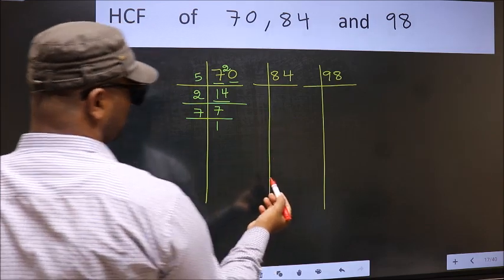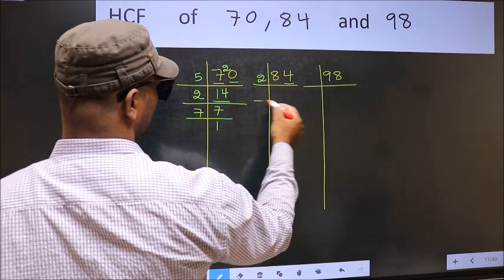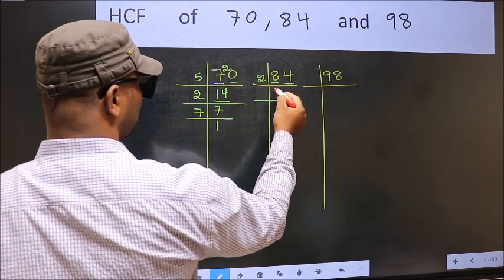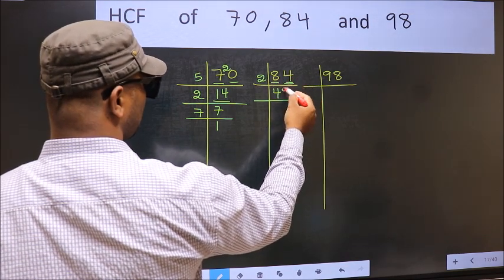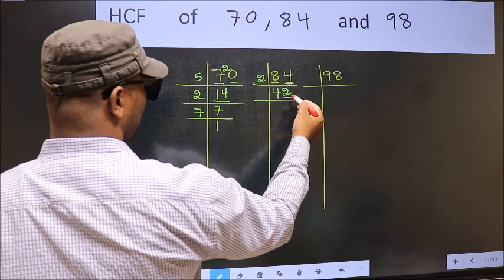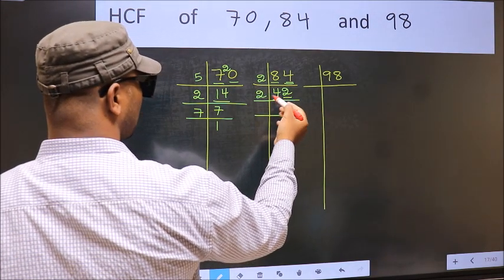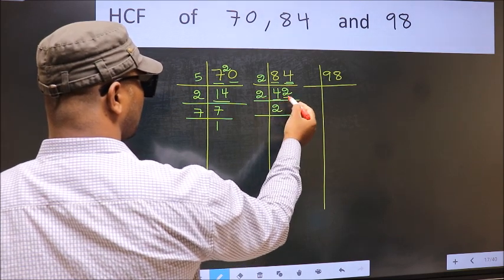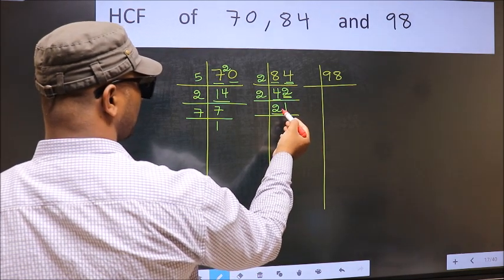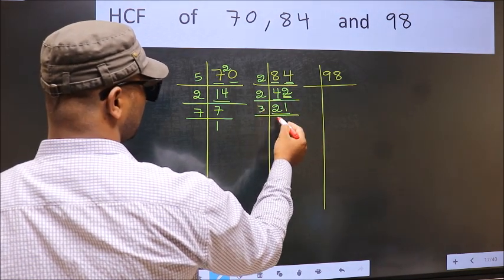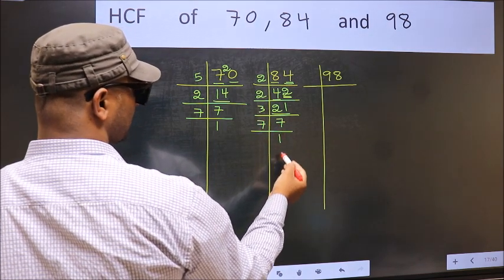The other number. Last digit is 4, even, so take 2. First number 8, when do we get 8 in the 2 table? 2 fours 8. The other number 4, when do we get 4 in the 2 table? 2 twos 4. Now last digit 2, even, so take 2. First number 4, when do we get 4 in the 2 table? 2 twos 4. The other number 2, when do we get 2 in the 2 table? 2 ones 2. Now here we have 21. 21 is 3 sevens 21. Now 7, 7 is a prime number, so 7 once 7.